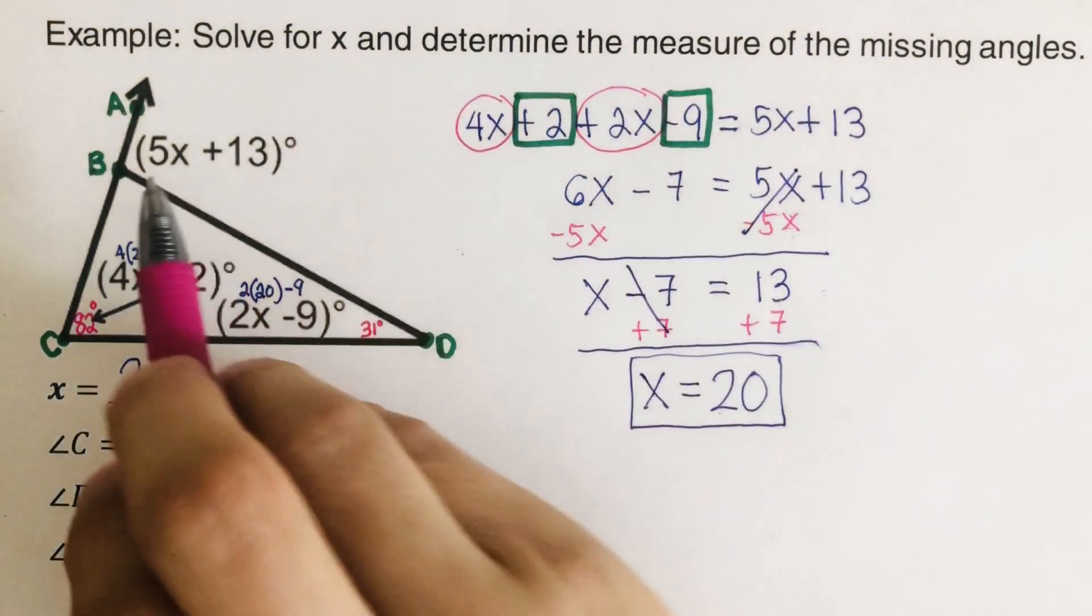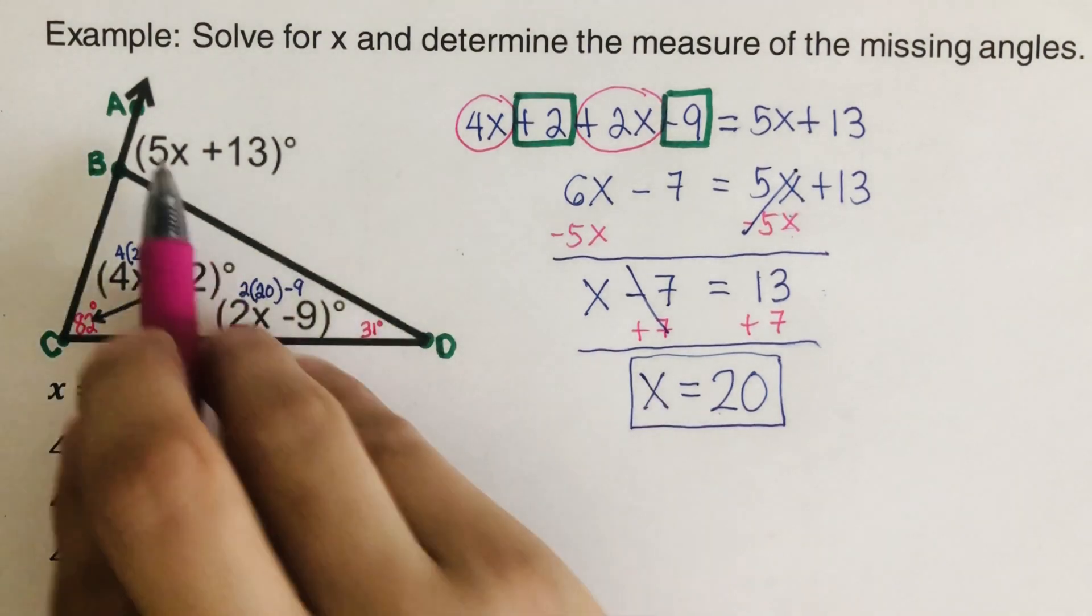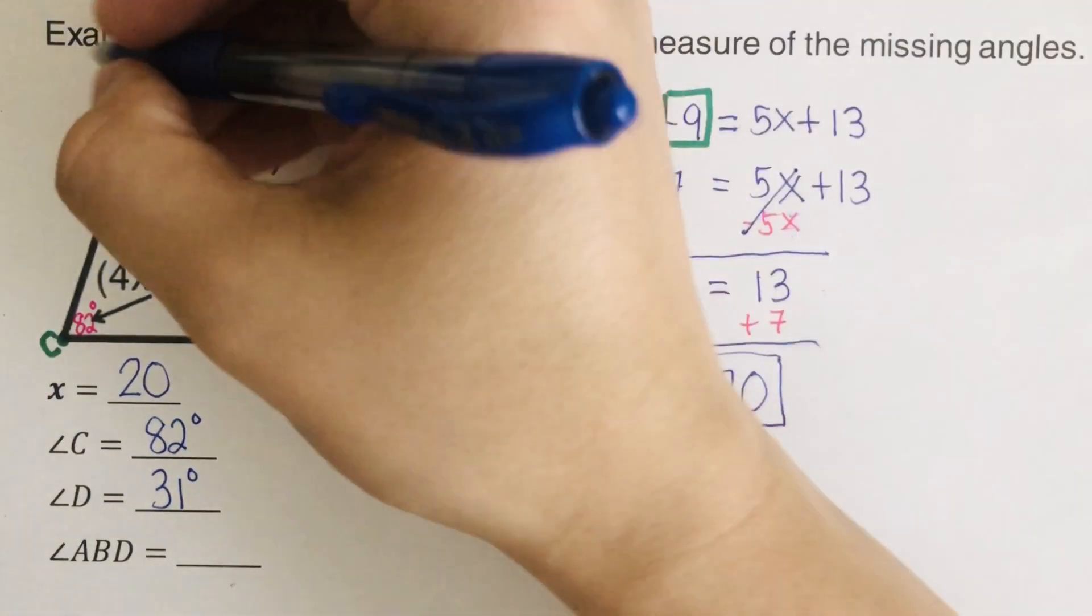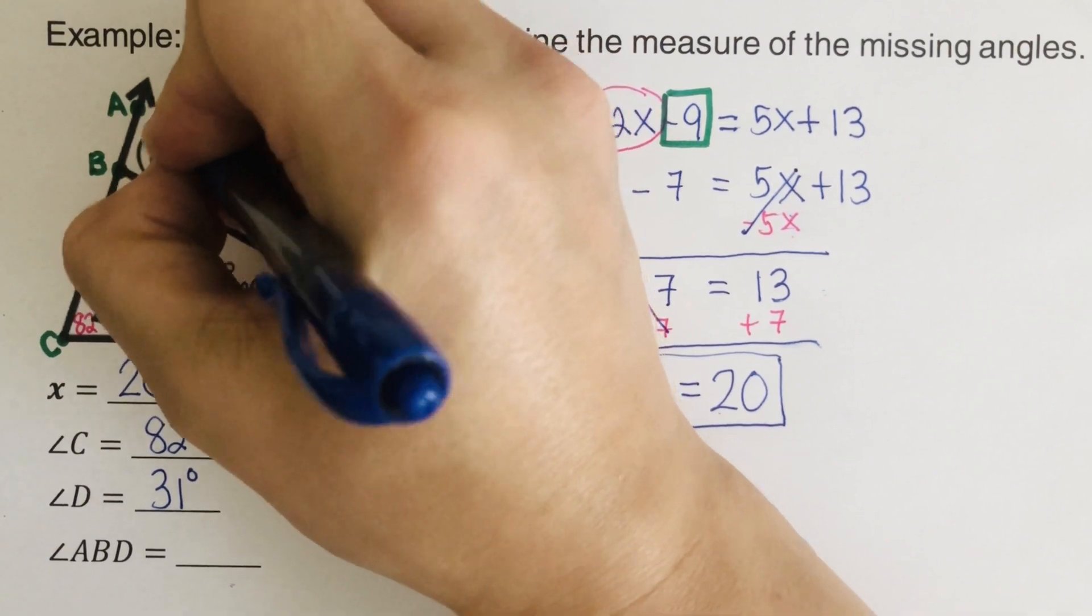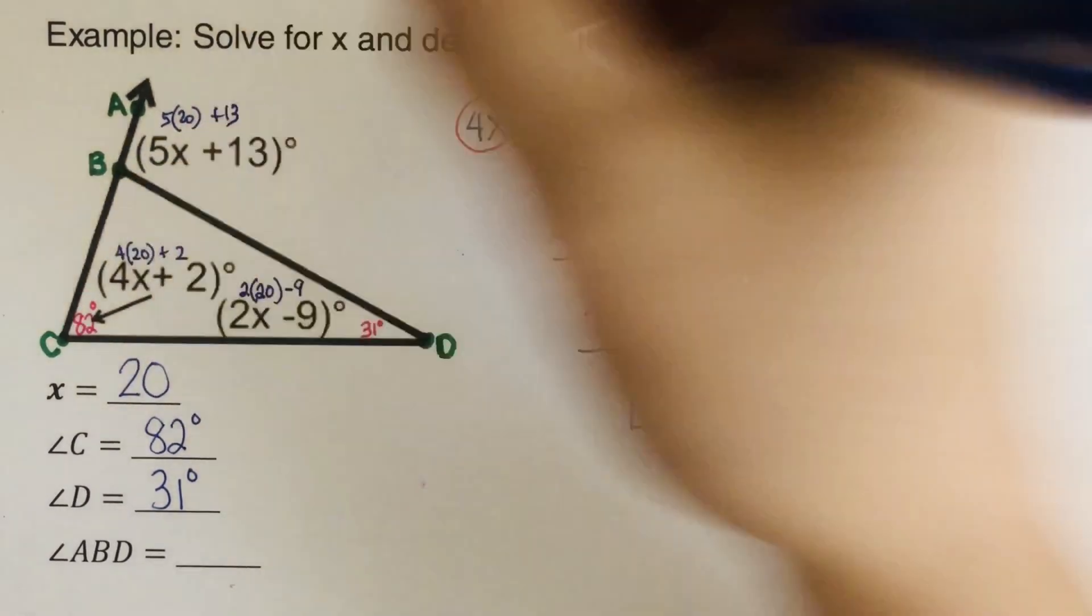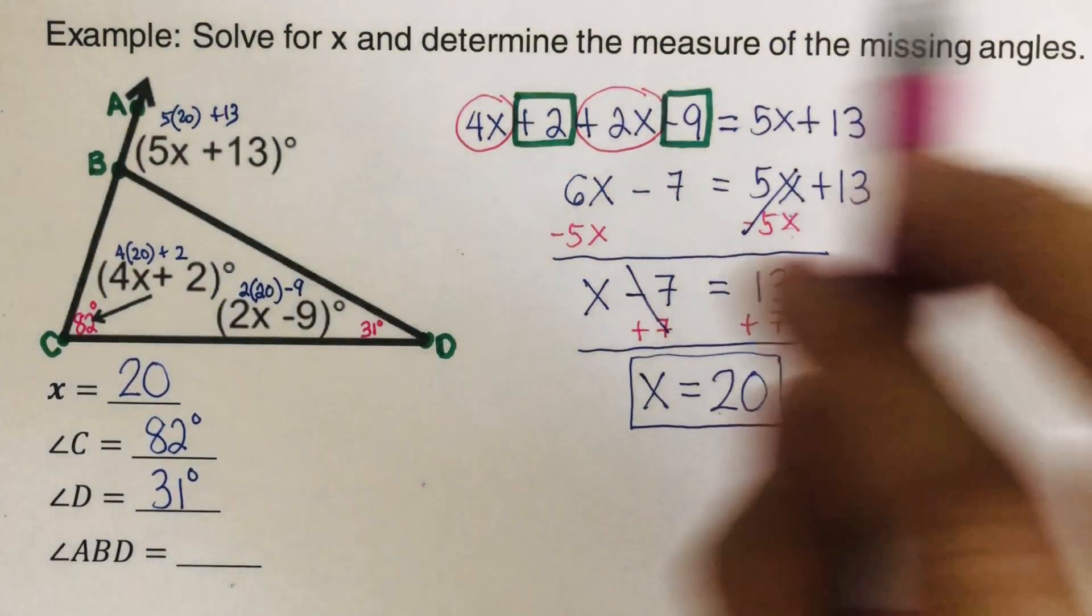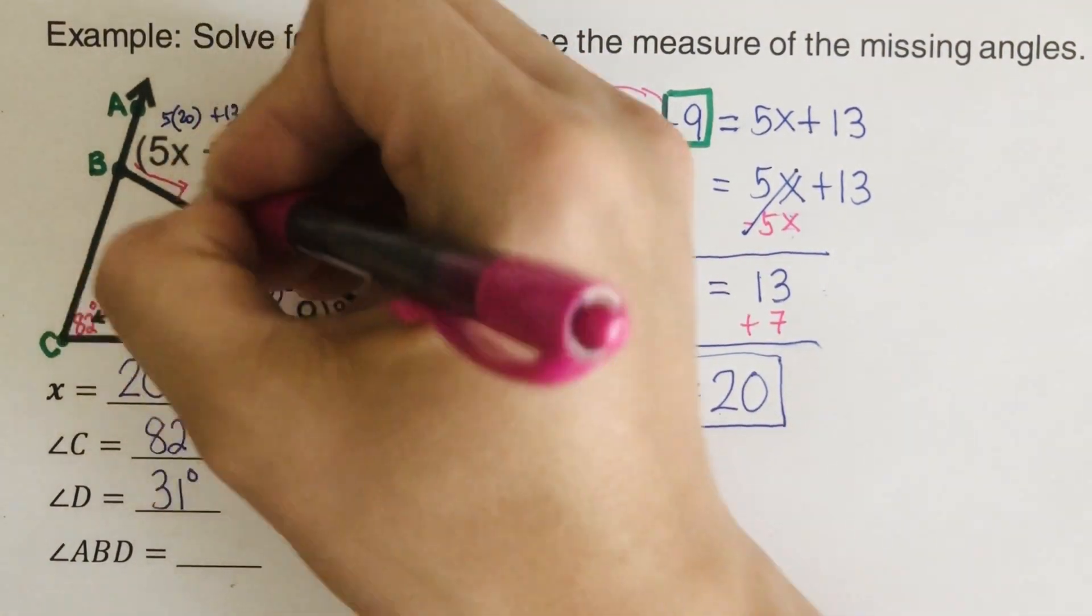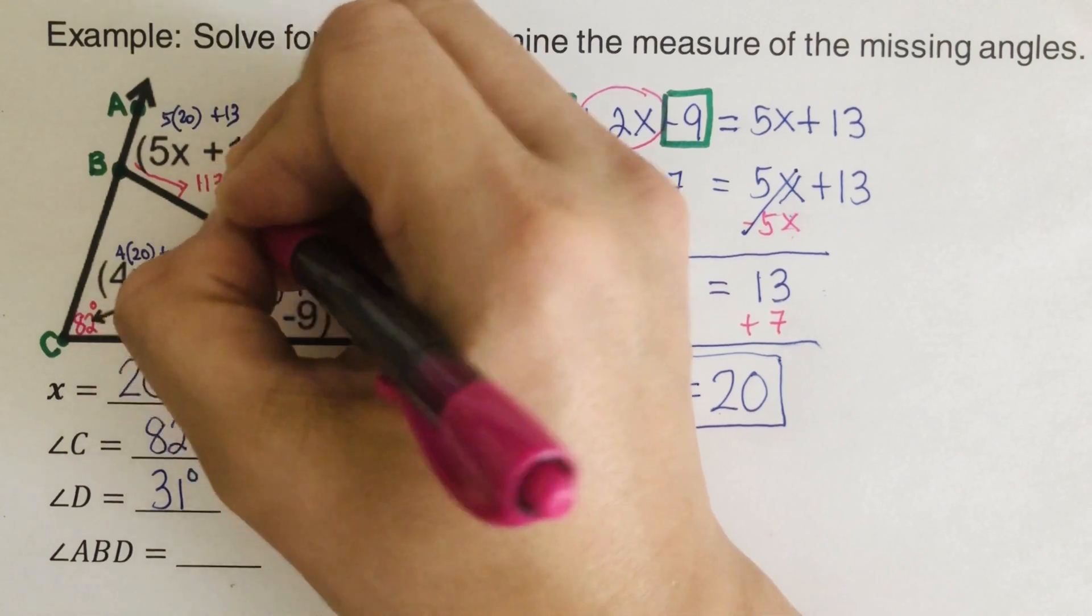And so I plug in the value of x again to this exterior angle. So that would be 5 times 20 plus 13. That's going to be 5 times 20 is 100. 100 plus 13 is this angle right here is 113 degrees.